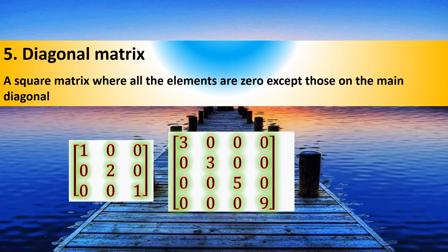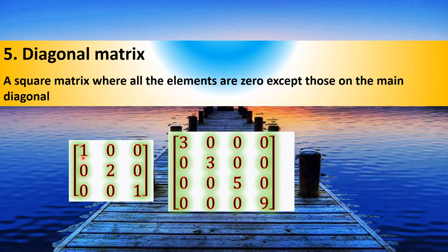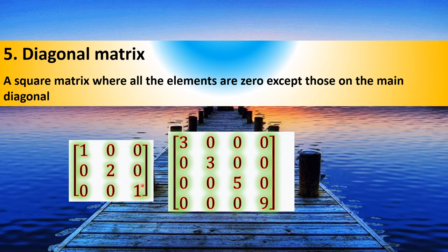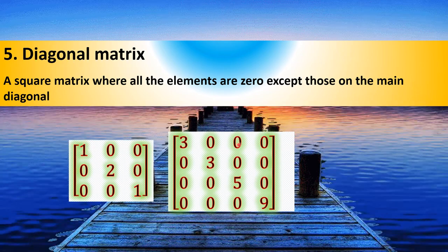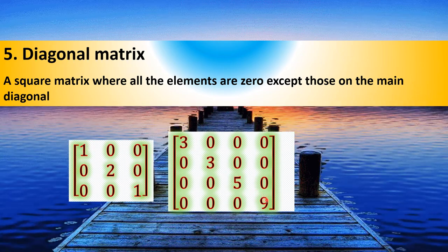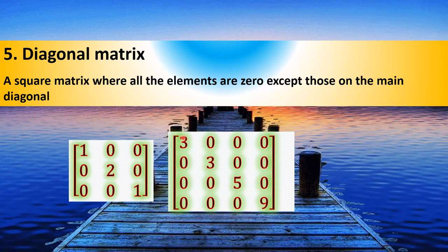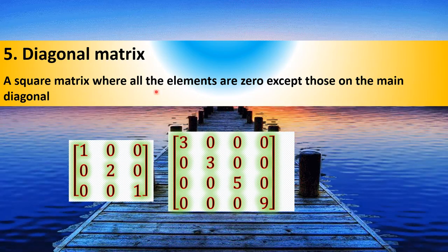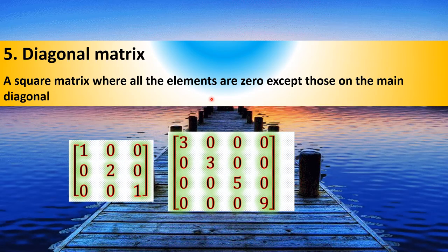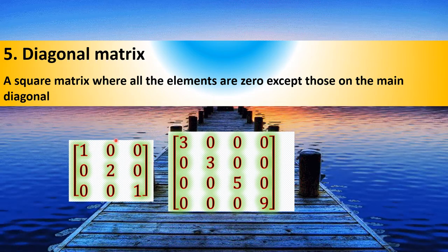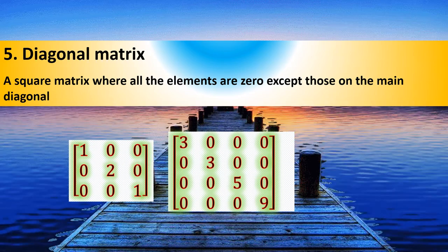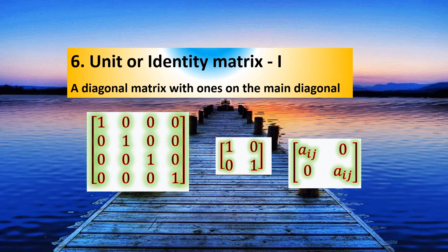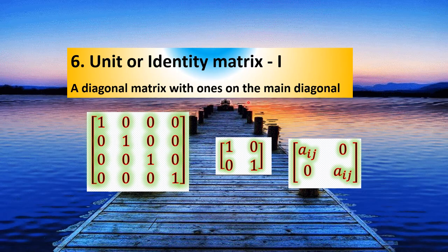Here is the diagonal matrix. A diagonal matrix is a square matrix where all elements are zero except those on the main diagonal. The main diagonal elements are the key feature of the diagonal matrix.